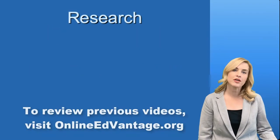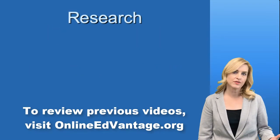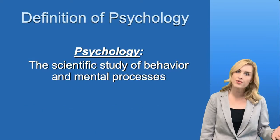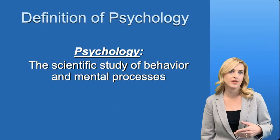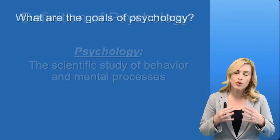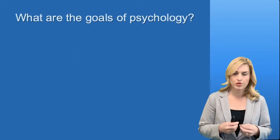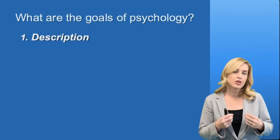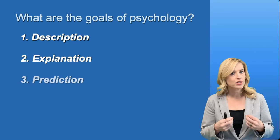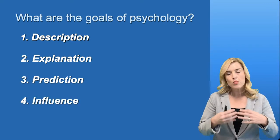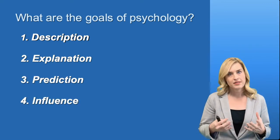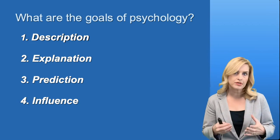Last time we talked about the definition of psychology and the fact that it's the scientific study of behavior and mental process. But there are four goals of psychology that are really important to us: description, explanation, prediction, and influence. We don't work on all of these goals at the same time, but they're all important.